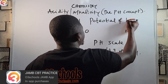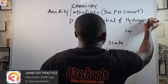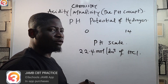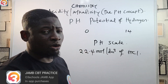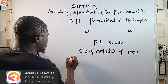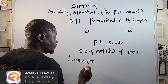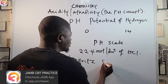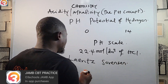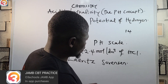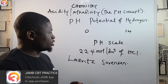pH means potential of hydrogen. This word was first coined by a man called Søren Sørensen — he was the first person to coin the term 'pH.'